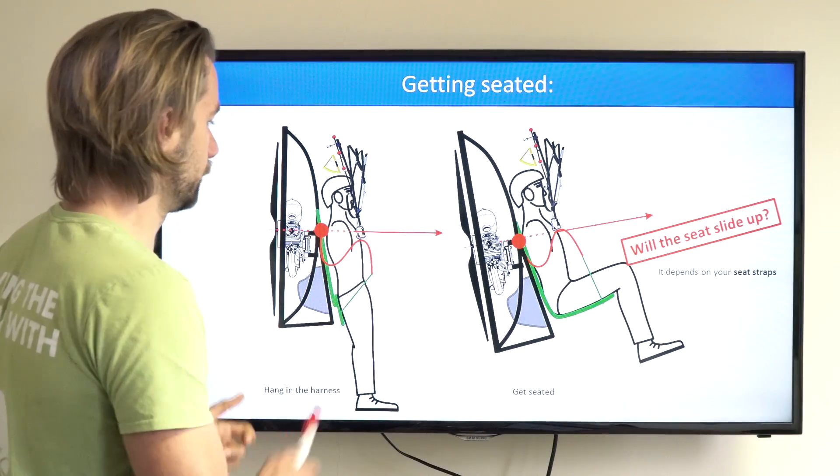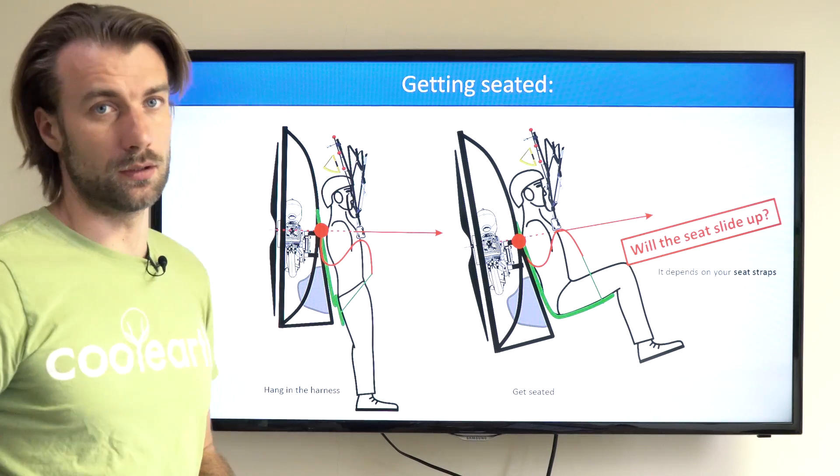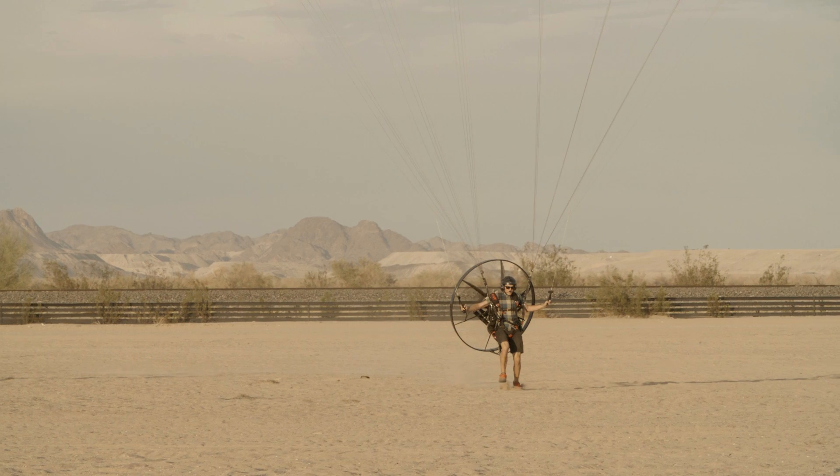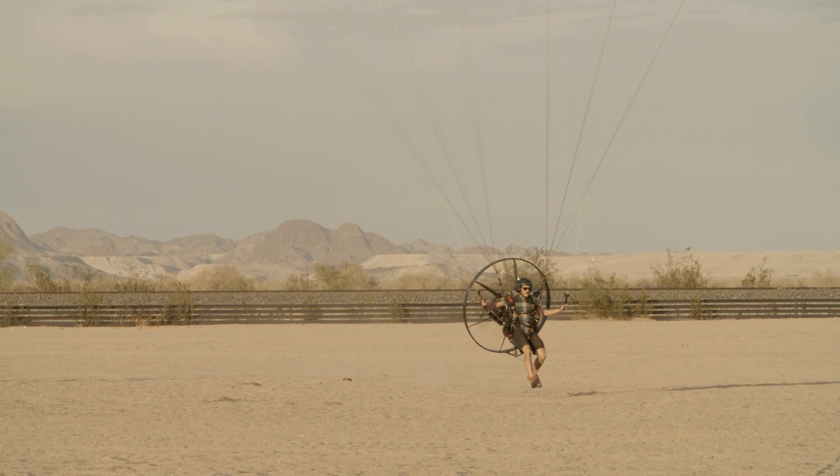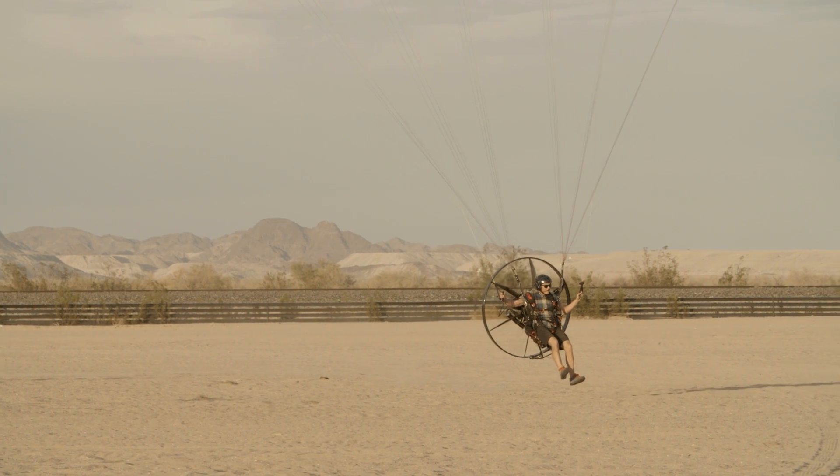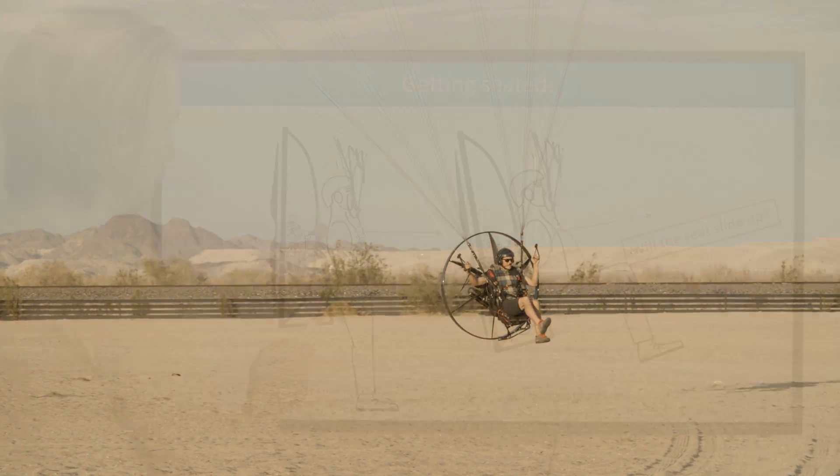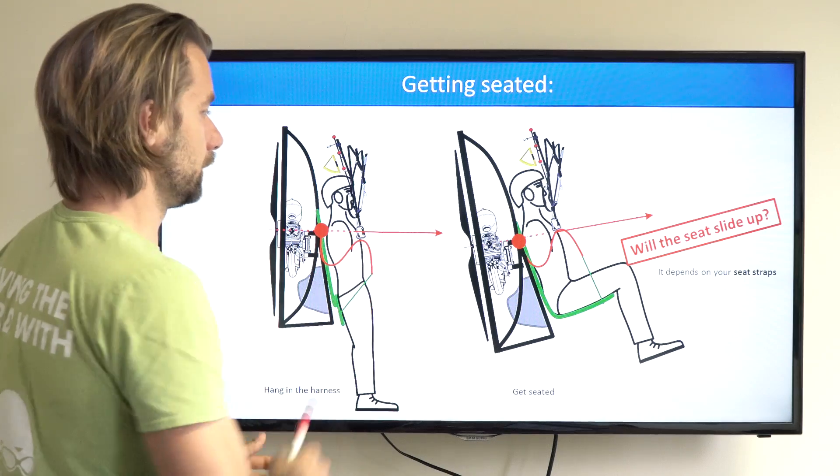This is the transition between hanging in the harness on your balls right after takeoff and getting seated. At this moment what you want is raise your knees and you will hope the seat board will slide up underneath your legs.